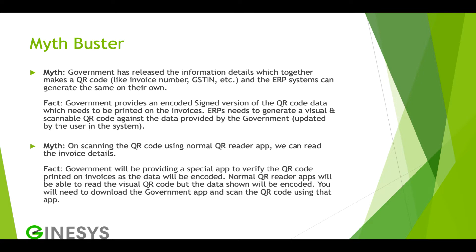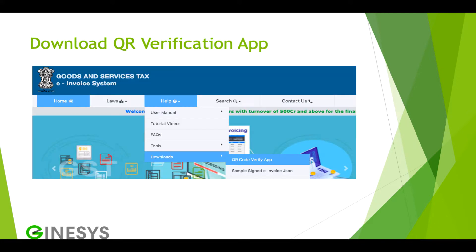The second myth is that on scanning the QR code using a normal QR code reader app, we can read the invoice details. The fact is that the government wants us to print the encoded QR code data as a QR code on the invoice. Normal QR readers will be able to read the visual QR code available on the invoice; however, it will show the data in an encoded format which as a layman we won't be able to understand. The government has provided a special app using which the QR code on the invoices can be verified.